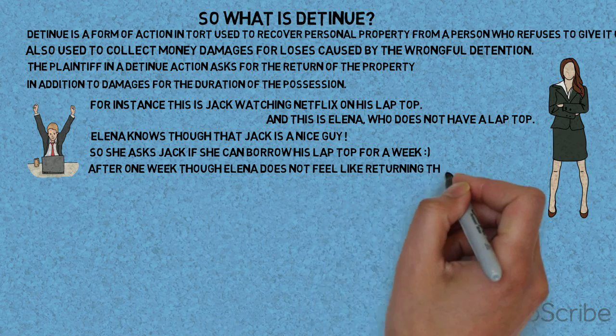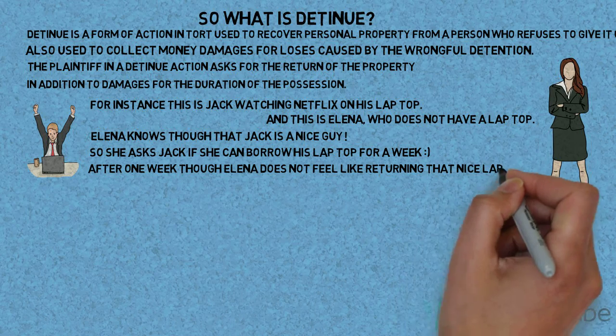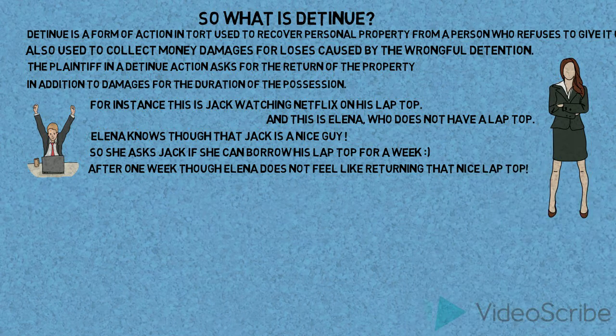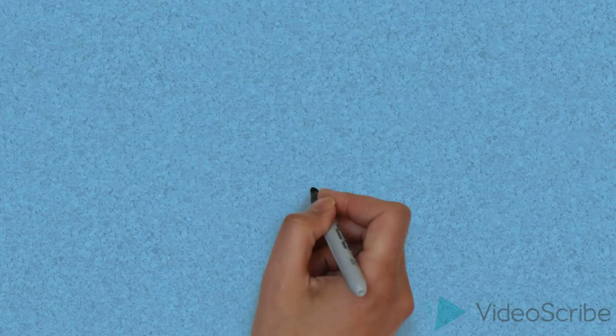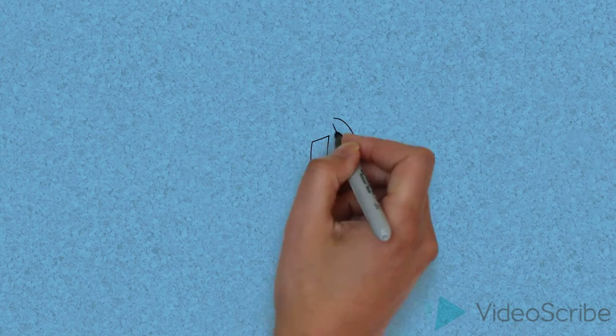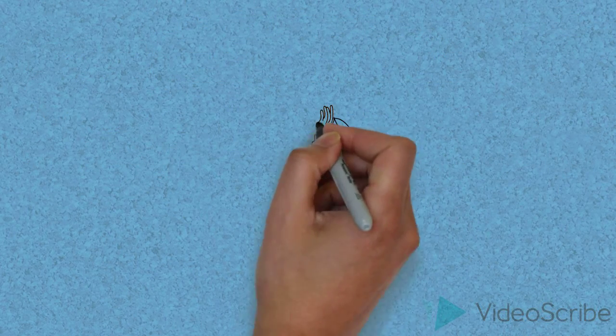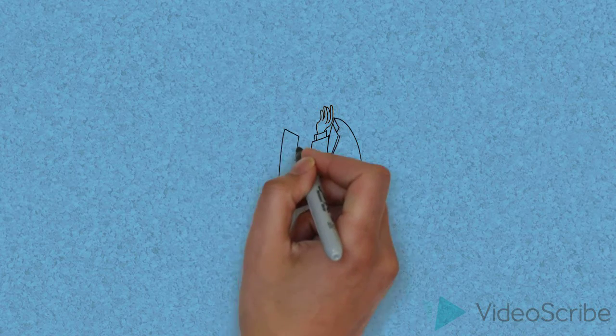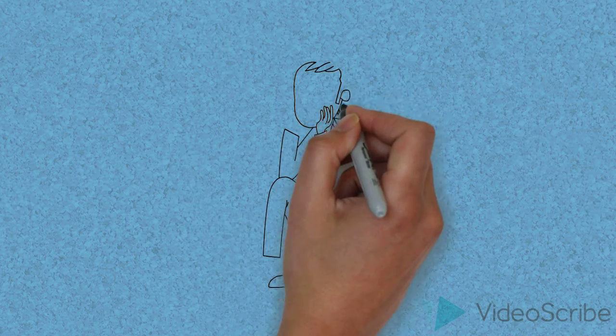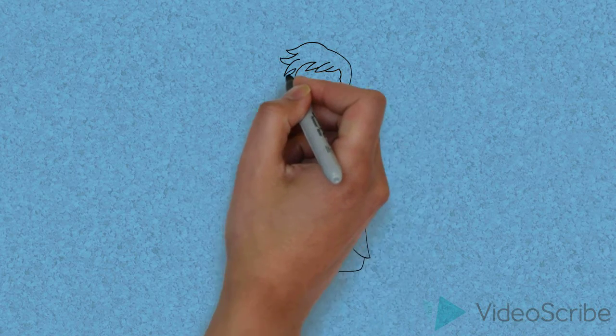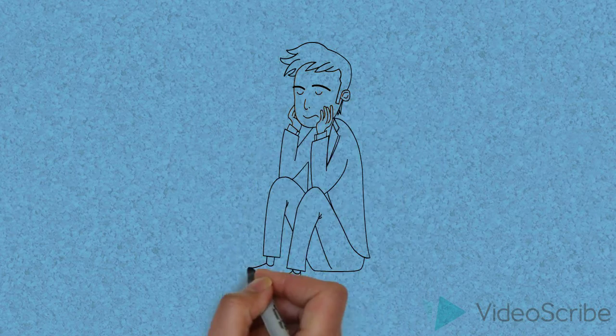After one week, though, Elena does not feel like returning that nice laptop. And here is Jack — depressed, suicidal — he does not know what to do.